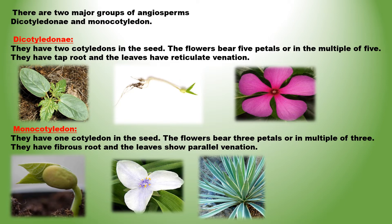Monocotyledons have one cotyledon in the seed. The flowers bear 3 petals or multiples of 3. They have a fibrous root and the leaves show parallel venation. Examples include rice, wheat, and grass.